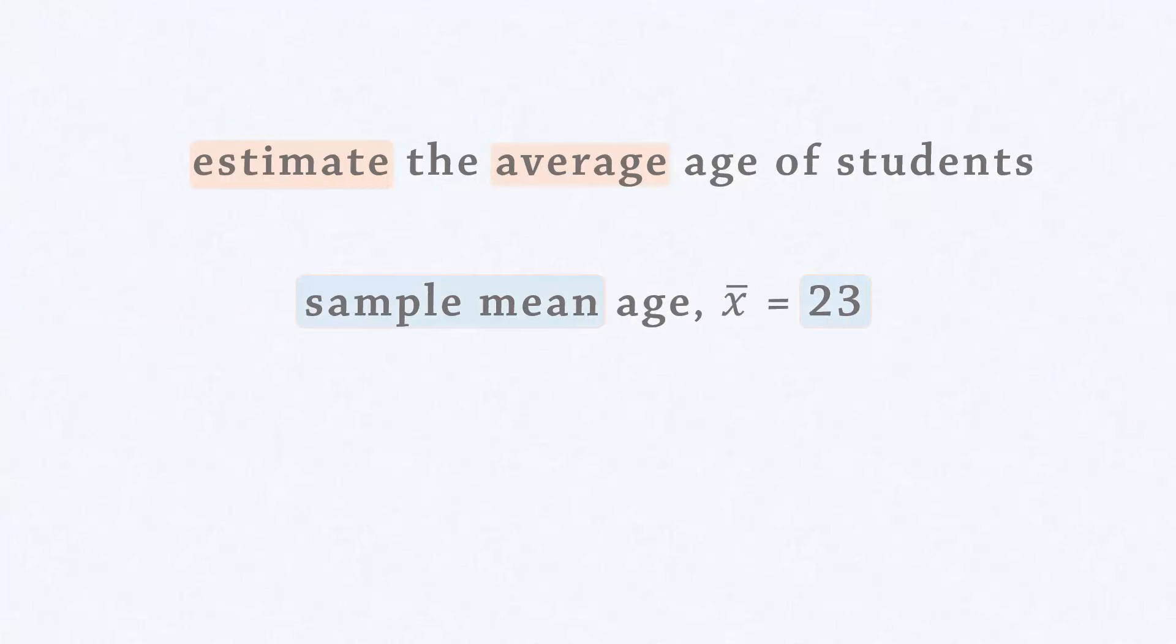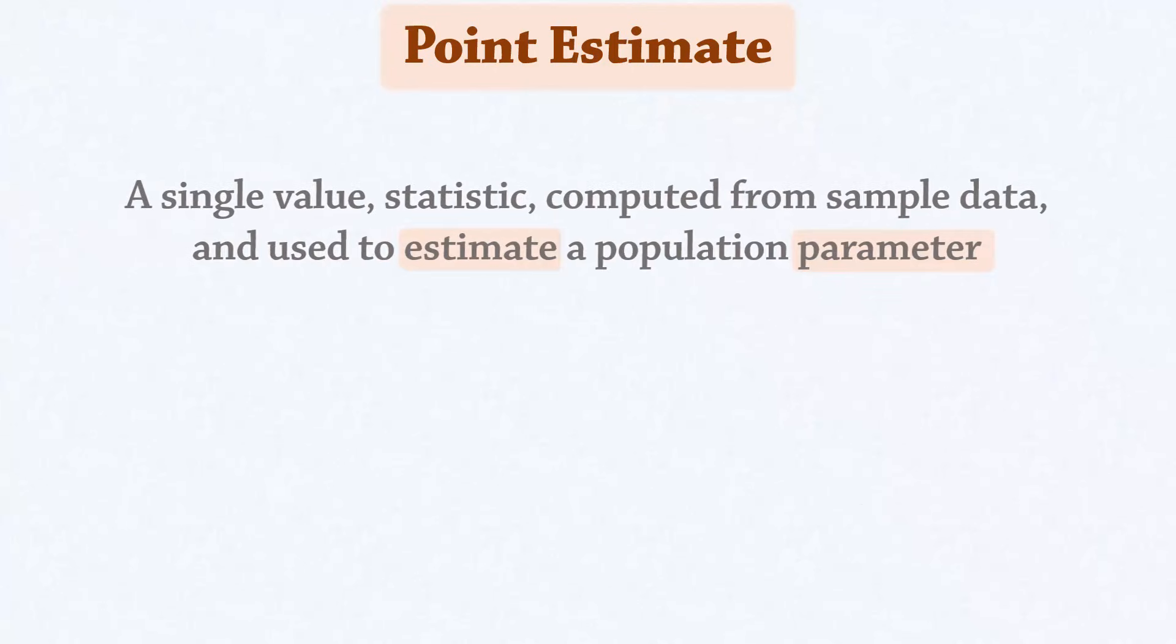This sample mean of 23 is called a point estimate of the population mean mu. So a point estimate is a single value, that is, a statistic computed from sample data and used to estimate a population parameter.